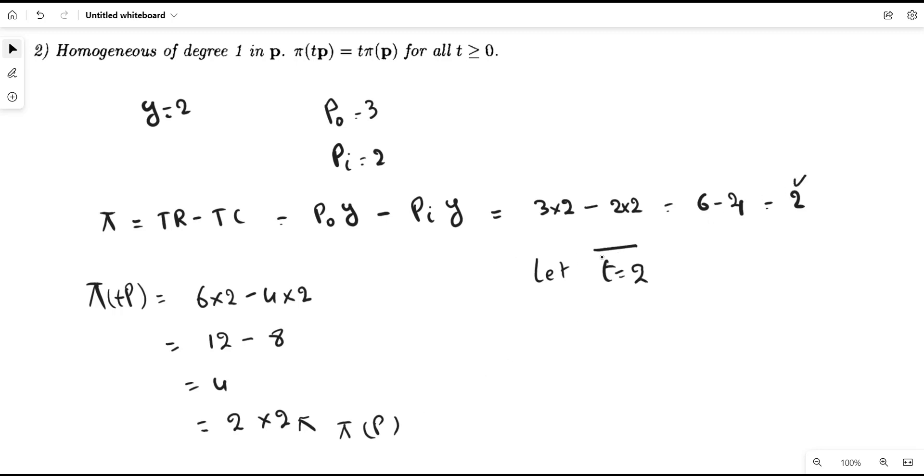Since we have increased the input and output prices by 2, by the same t, your profit has also been increased. Because when we multiply the price of output and the price of input by 2, profit is also multiplied by 2.